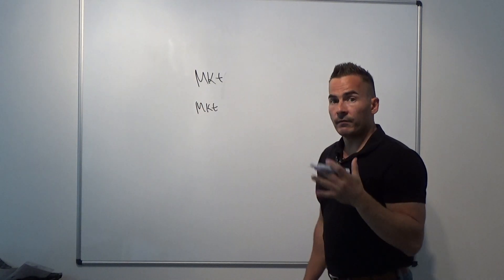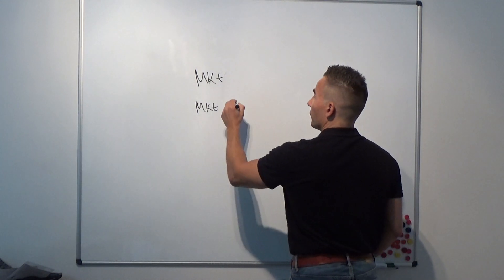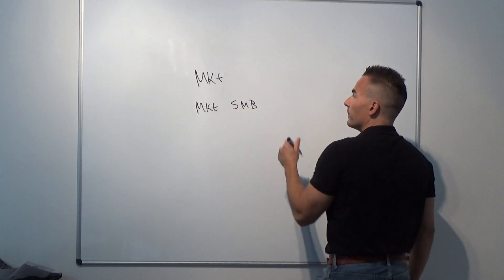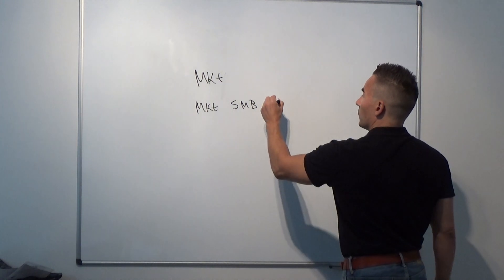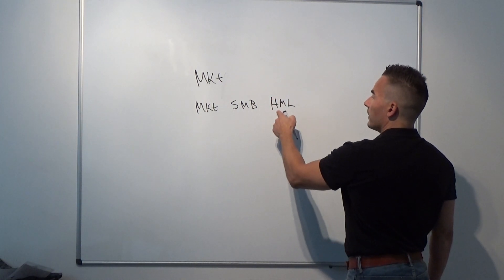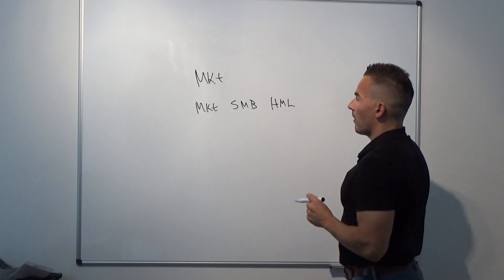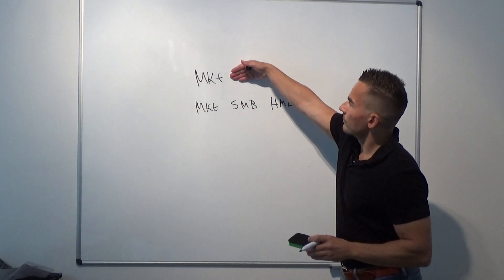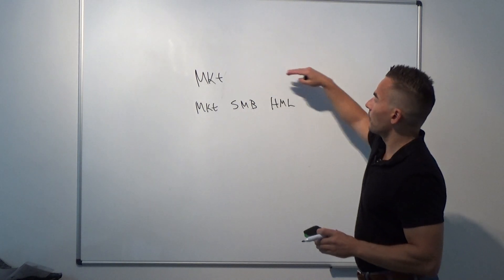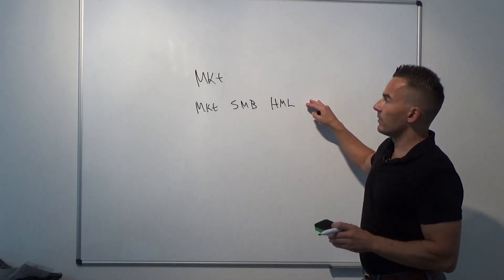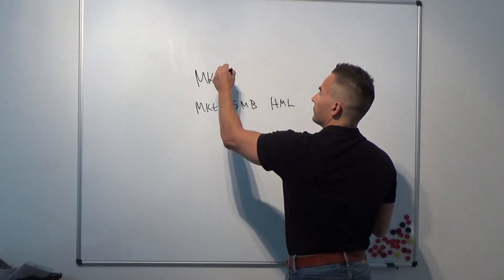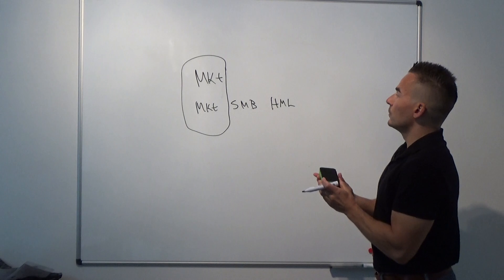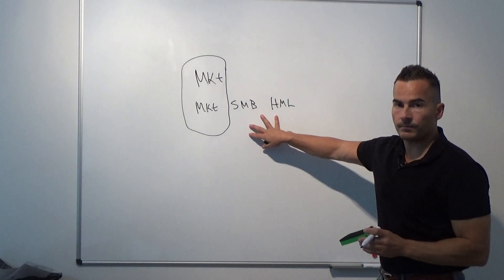The Fama-French three-factor model contains the market factor, the size factor SMB (small minus big), and the value factor, which is often abbreviated as HML — high minus low book-to-market ratio.